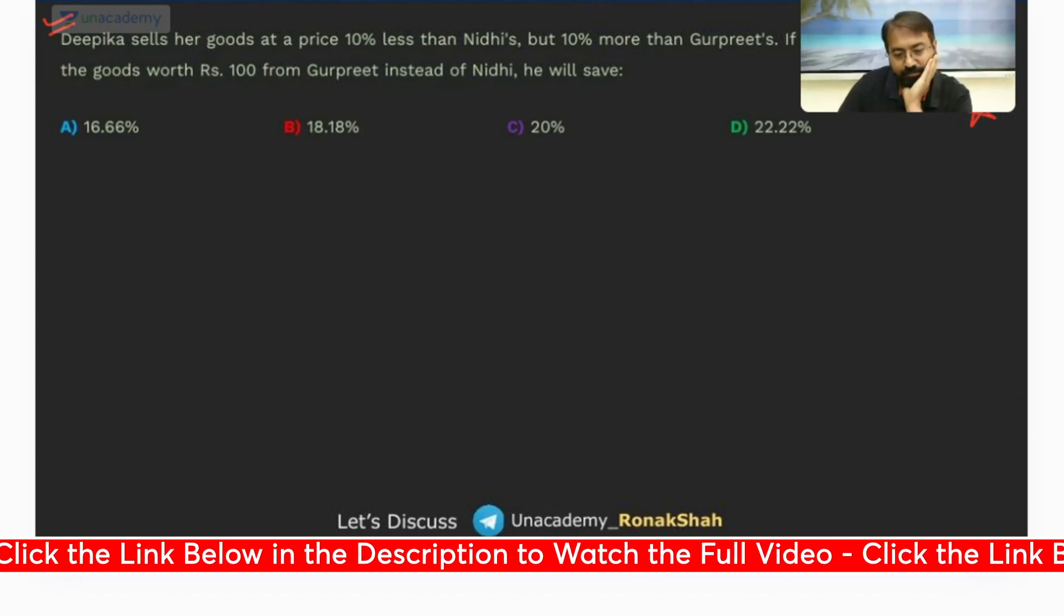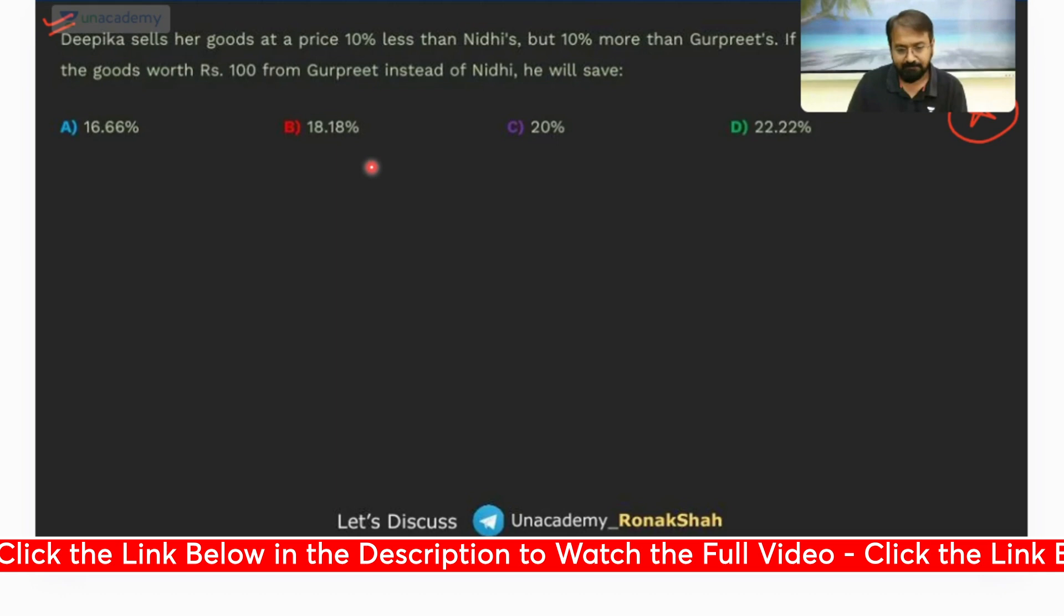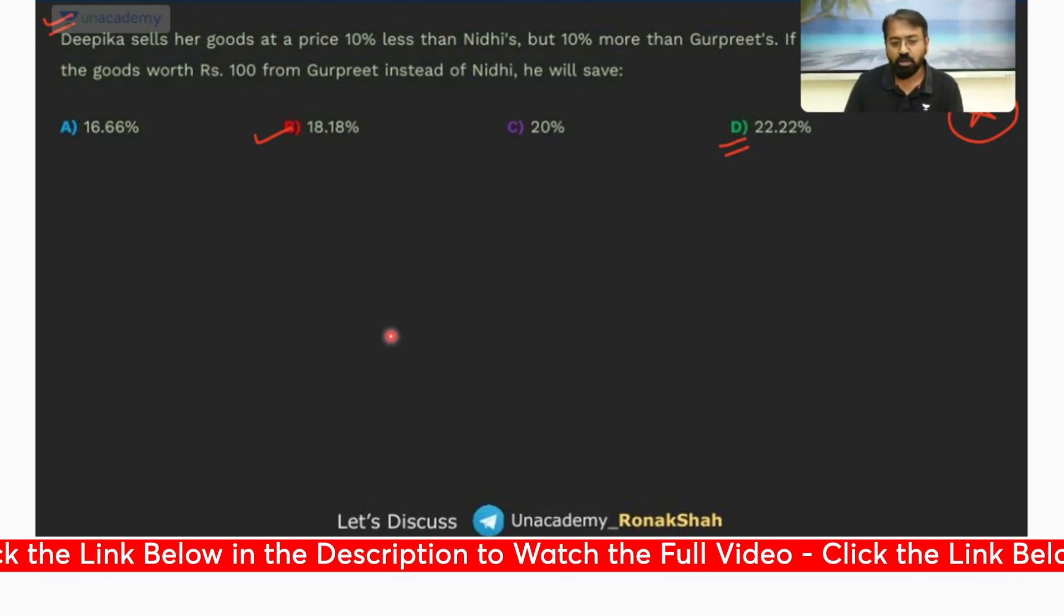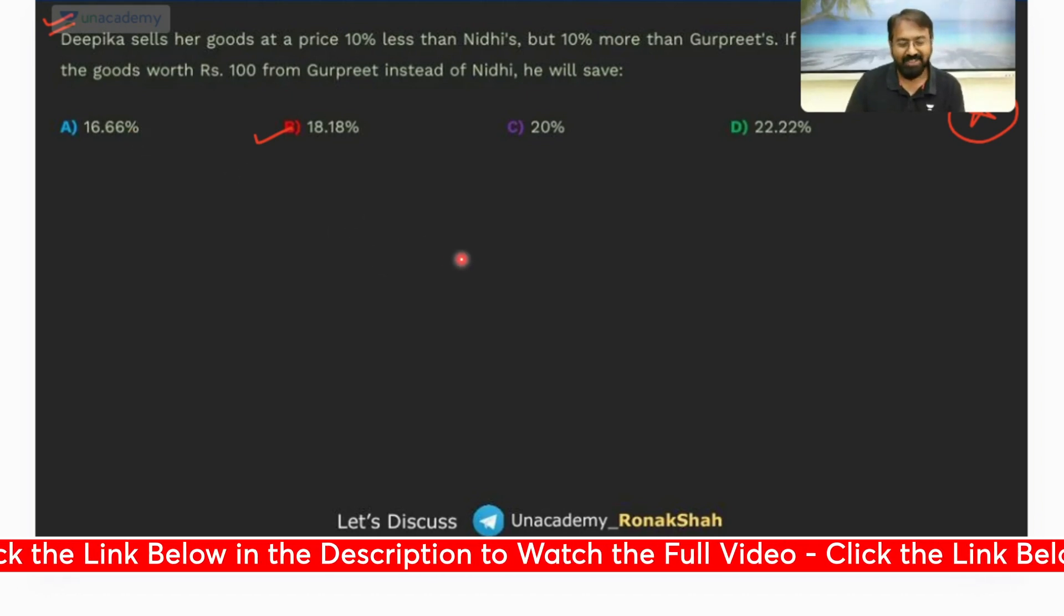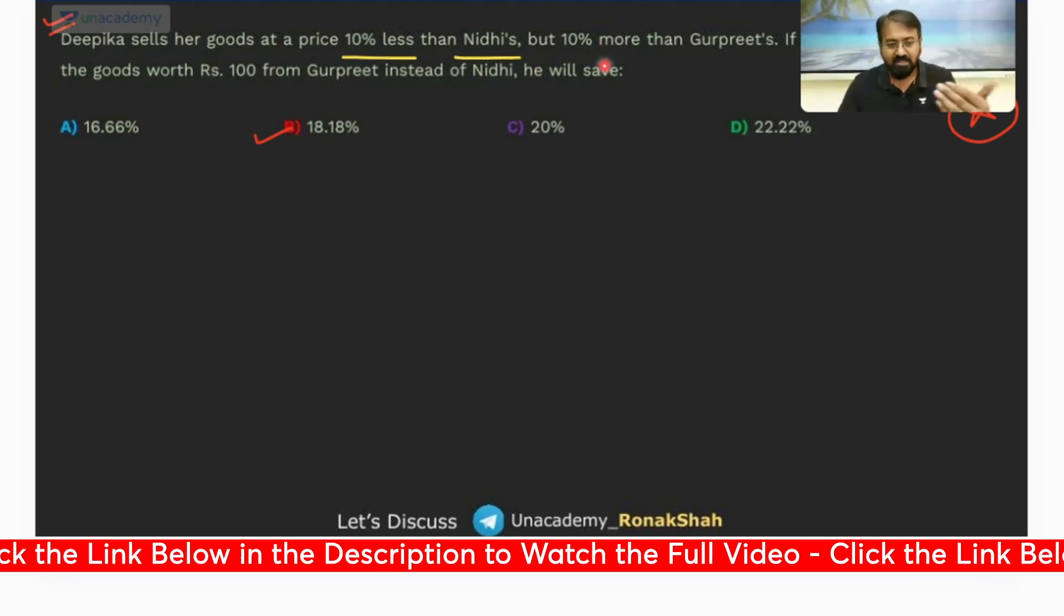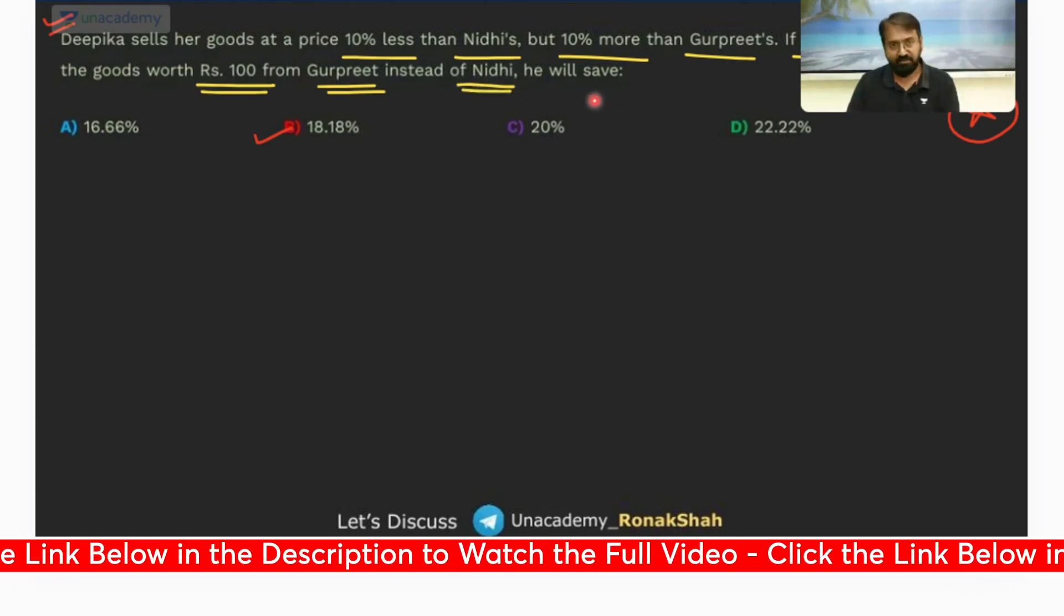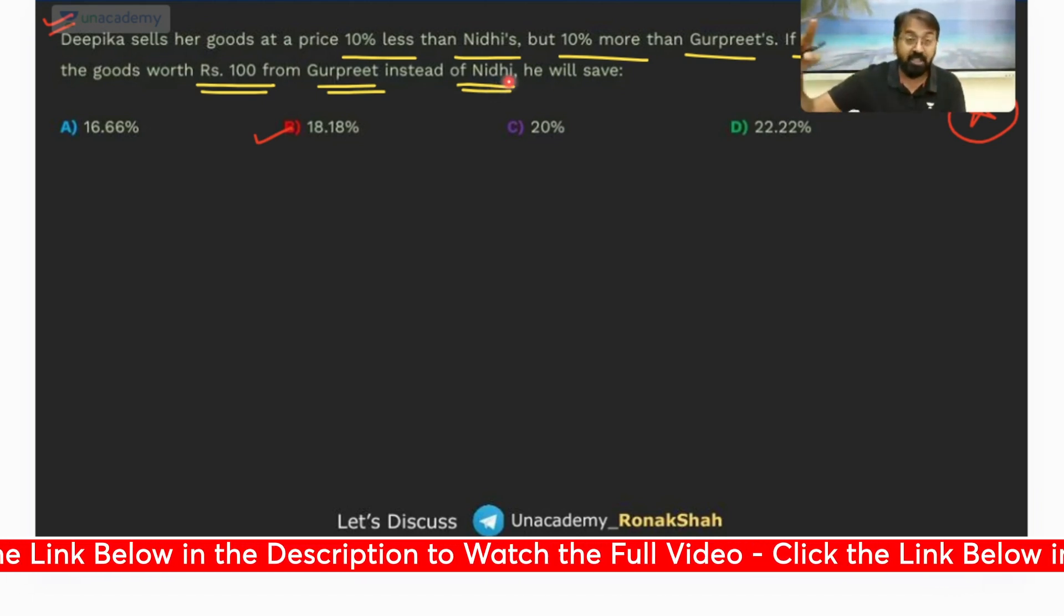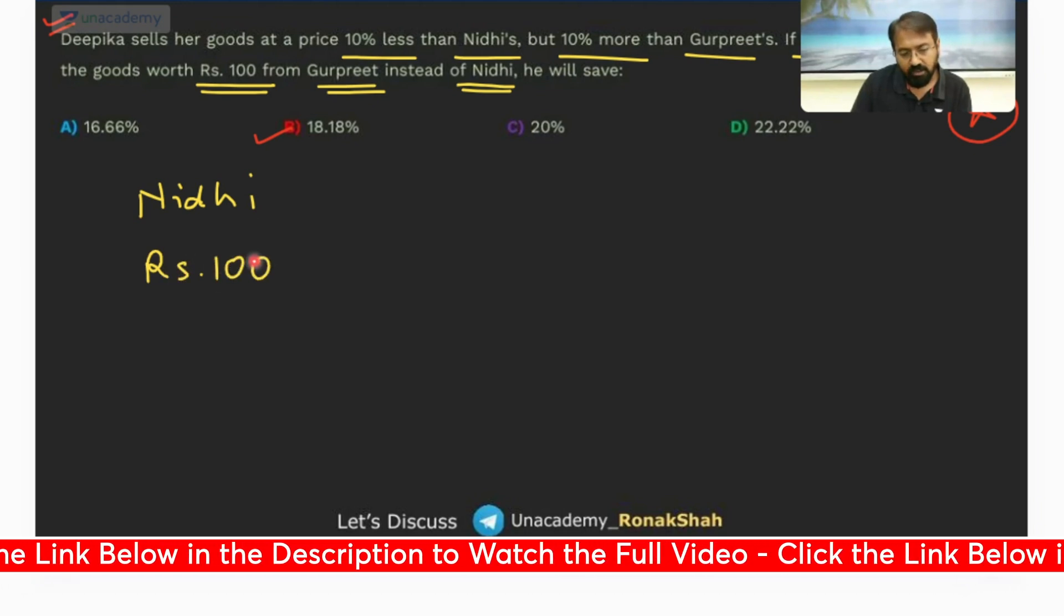Now this was a nice question. Could you solve this question? Yes, this was a nice question. It's an easy question but it can trick you. The answer for this question is 18.18. How many of you got 22.22? I'm sure there would be some students who must have got 22.22. That's a common mistake. So let's understand. Read the question first. Deepika sells her goods at a price 10% less than Nidhi's, but 10% more than Gurpreet's price.